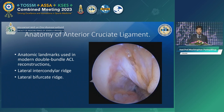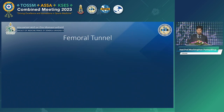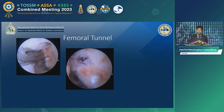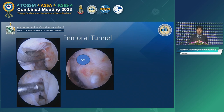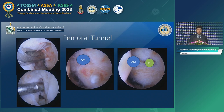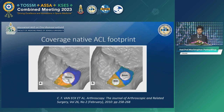After identifying exactly where the AM and PL tunnels should be, the tunnel should be placed in the center of the insertion site. In my practice, I mostly use a 5–6 mm aiming device, sparing the posterior cortex around 1–2 mm to create the AM tunnel in deep knee flexion, and spare the bifurcate ridge around 2–3 mm using freehand technique to create the PL tunnel. These two tunnels cover the native ACL footprint.